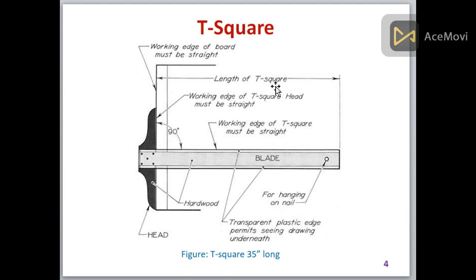Next one is the T-square. T-square is a very important tool in drawing instruments because there are many purposes - we can make a 90 degree angle from it. These are made from hardwoods. This is for hanging on nails. These areas are transparent plastic edges with scaling on it and also permit to see through it.